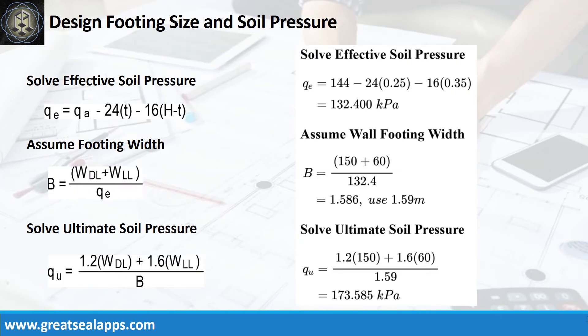Given allowable soil pressure equals 144kPa, depth from natural grade line equals 600mm, and assume footing depth equals 250mm. The effective soil pressure is 132.4kPa. Given uniform dead load equals 150kN per meter and uniform live load equals 60kN per meter. The footing width is 1.59 meters, and the ultimate soil pressure is 173.585kPa.